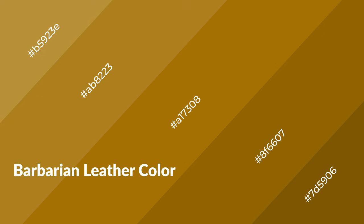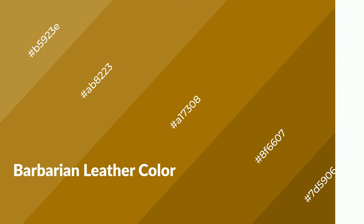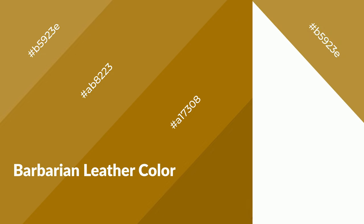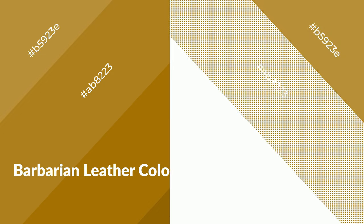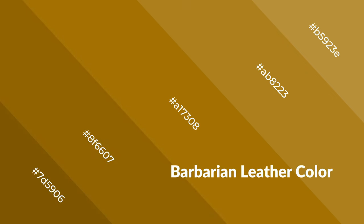Barbarian leather is a warm color and it emits cozier and active emotions. Warm colors are symbols of warmth, fire, heat, and sunshine. It also evokes joy, passion, love, and even anger. You can see warm colors used in restaurants and gyms.